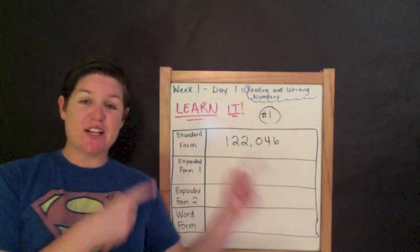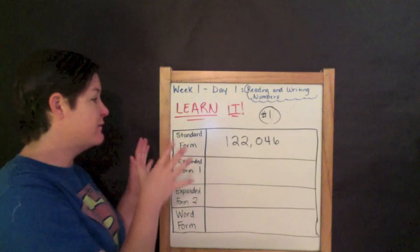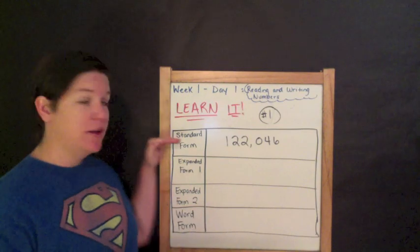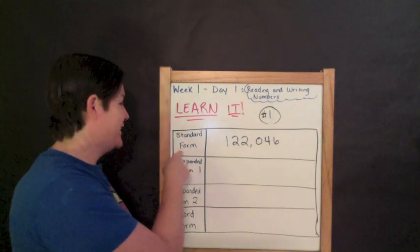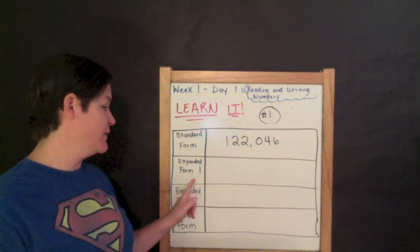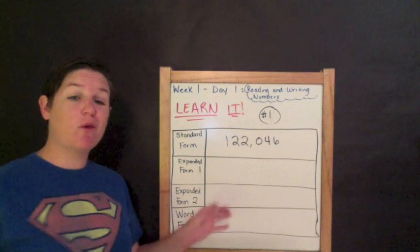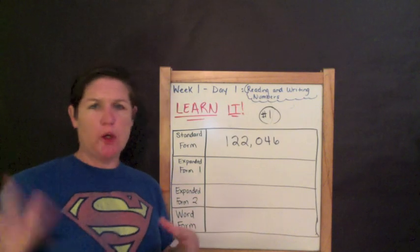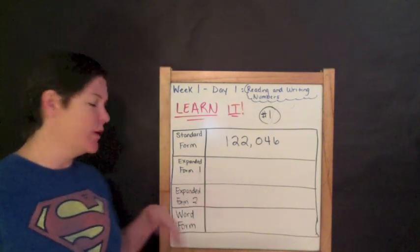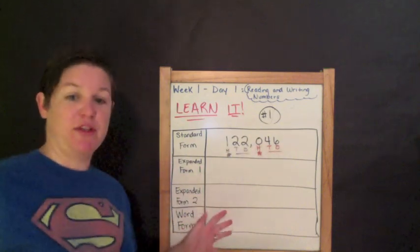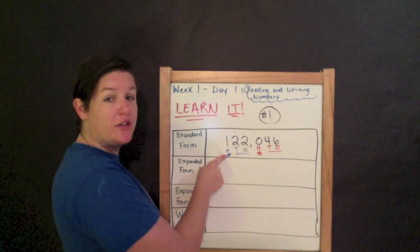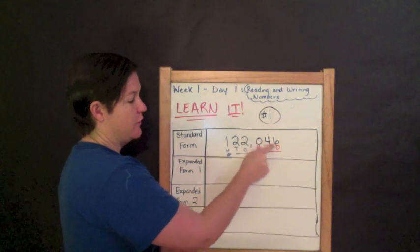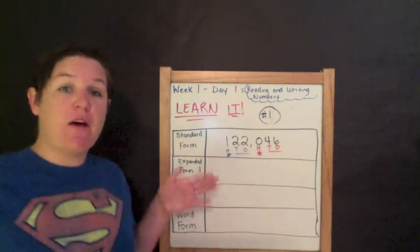Alright folks, here we are at the Learn It section number one. The directions say to use the information given in the table to complete the table. We have the standard form, which has been given to us, but we need to find expanded form one, expanded form two, and the word form. You might be saying, Ms. McCarthy, what are the two expanded forms? I'll explain that now. Let me read the number first: one hundred twenty-two thousand — no hundreds — forty-six. So one hundred twenty-two thousand forty-six.